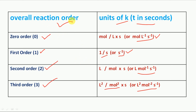To summarize the overall reaction orders and their rate constant units: zero order — mole liter inverse second inverse; first order — second inverse; second order — liter mole inverse second inverse; third order — liter squared mole to the power minus two second inverse.